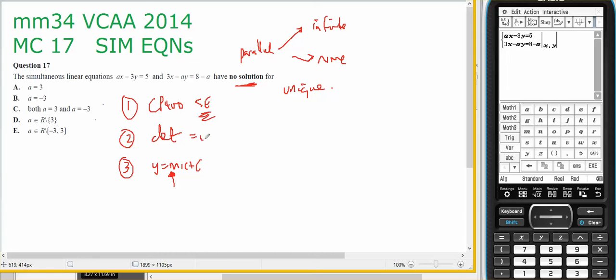If the determinant equals zero, therefore they're parallel. The general rule for the determinant, it has to be in the form of ax plus by equals c, dx plus ey equals f. So in this particular case, I've got ax minus 3y equals 5 and 3x minus ay equals 8 minus a.